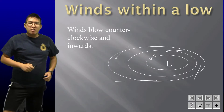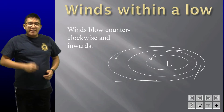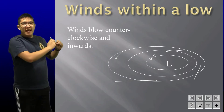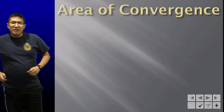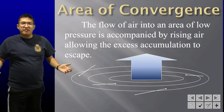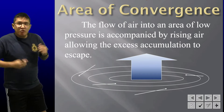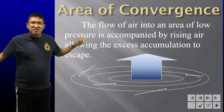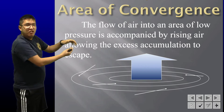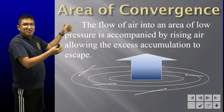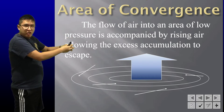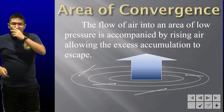Next we have winds within a low. Remember winds within a low pressure system will flow counterclockwise and inwards. And that's where we have an area of convergence, which is kind of the opposite of an area of divergence. In this case, the low pressure system tends to suck in all the air, so as the air gets sucked into the center, it starts to accumulate. Suddenly there's a lot of air in the center and it usually has nowhere to go but up. So it rises.